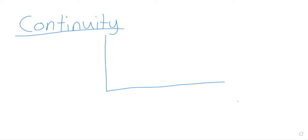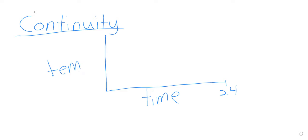But suppose we're looking at a graph of a real-world quantity — suppose we're looking at a graph of the temperature, for example — and we'll look at how the temperature changes over time. This can be going from zero to 24, where zero is midnight and 24 is also midnight. And the y-axis can be the temperature.